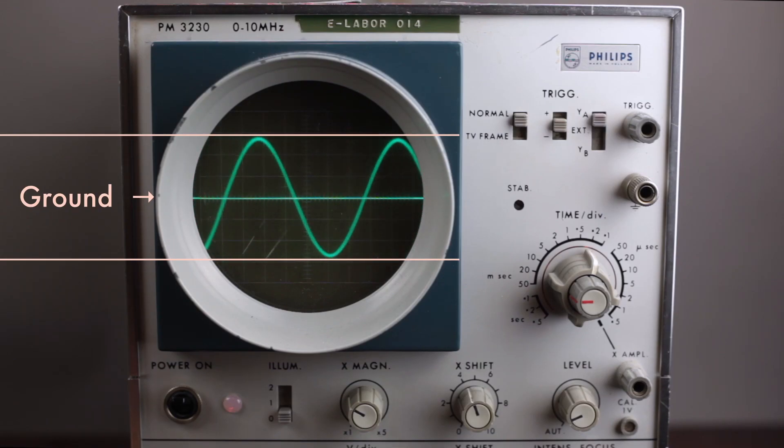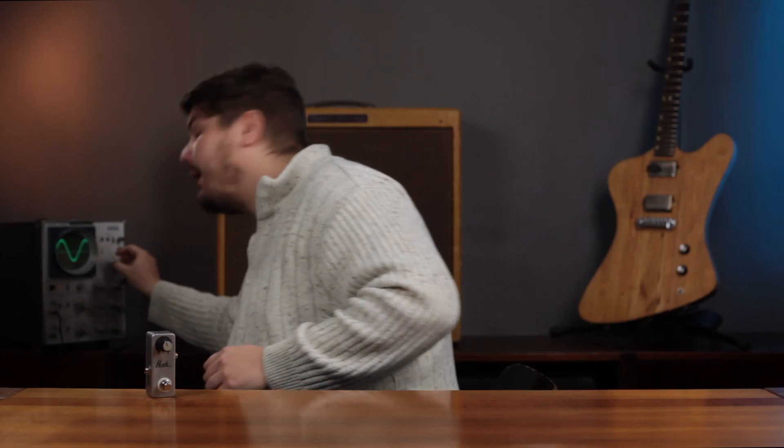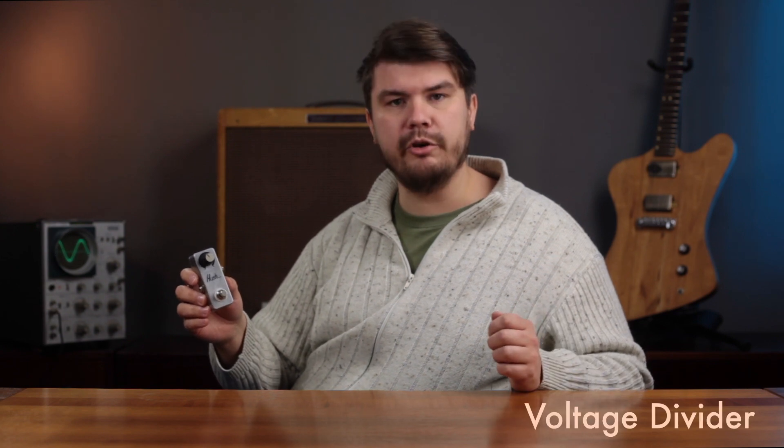As the oscilloscope shows voltage levels on the y-axis, we now know that we have to lower the voltage differential of our audio signal around ground to lower its volume. Now that we've covered the basics of audio signals, let's return to our volume pedal.